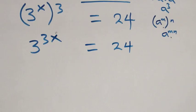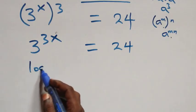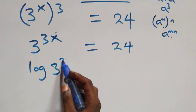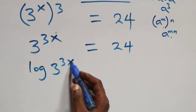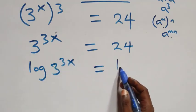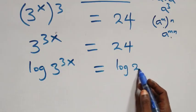And here we take the log on both sides — that is, we have log of 3 raised to power 3x, equals to log 24.